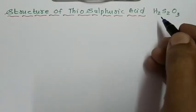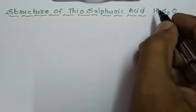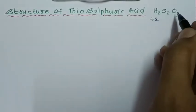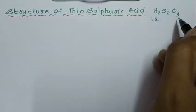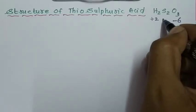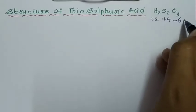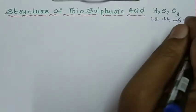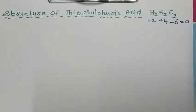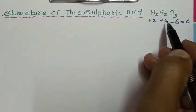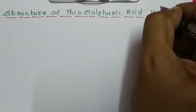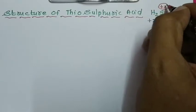Now we are going to see the oxidation number of sulfur in this compound. 1 hydrogen is plus 1, so 2 hydrogen gives plus 2. 1 oxygen is minus 2, so 3 oxygen gives minus 6. By putting plus 4 for two sulfur, we get the total equal to 0. We know the total oxidation state of elements in a compound equals 0. For 2 sulfur, oxidation state equals plus 4. Therefore, 1 sulfur has oxidation state plus 2.